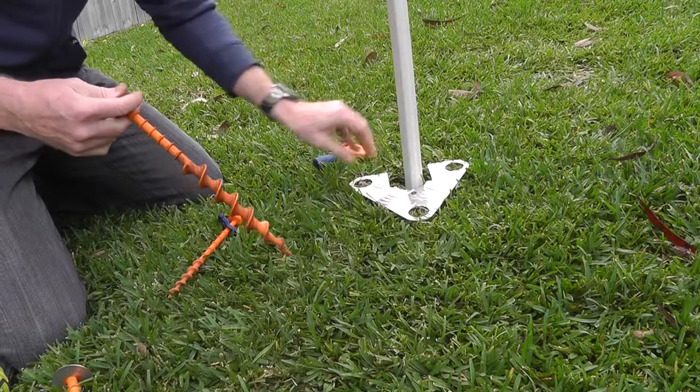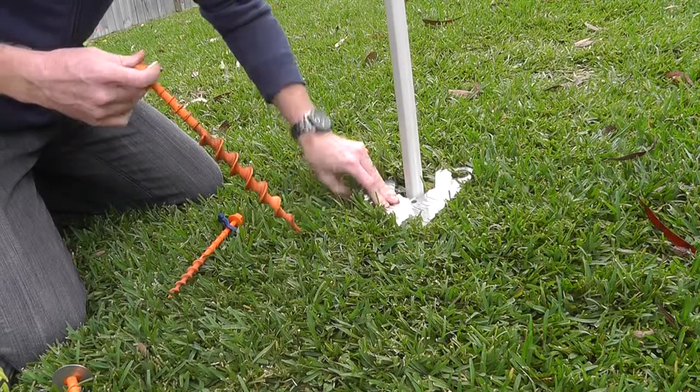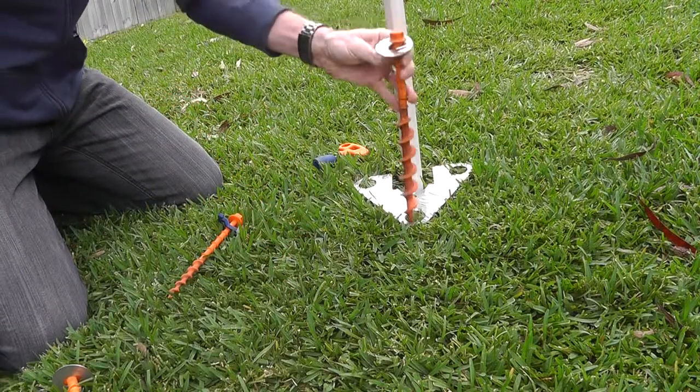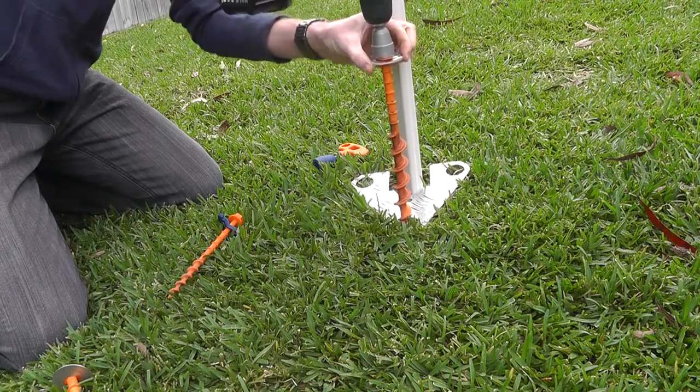Cover the awning leg or gazebo leg. As you would with any other Peggy Peg product, just screw it in.